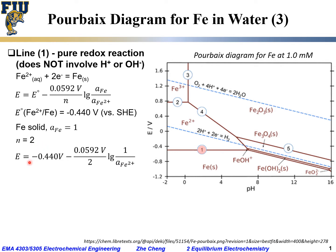With these values, we can simplify: the electrode potential equals the standard electrode potential (−0.440 V) minus 0.0592 volt divided by n (which is 2), times the log of the activity of iron (which is one) divided by the activity of Fe²⁺.